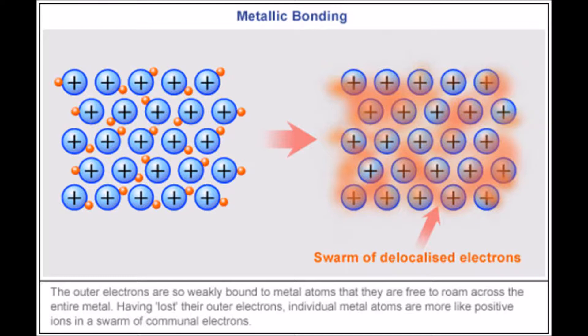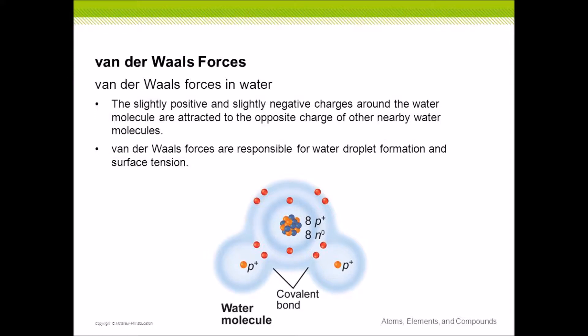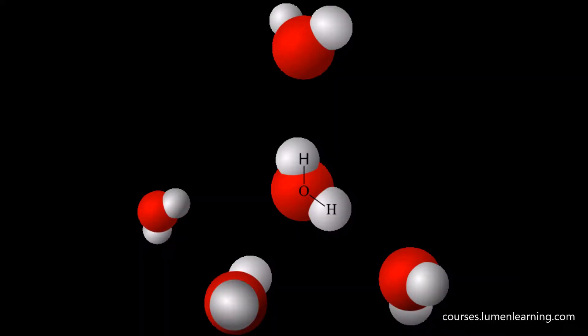Also, Van der Waals forces occur when uneven distribution of electrical charges around a neutral molecule exerts slight attractive and repulsive magnetic attraction to another molecule. For example, the oxygen atom of a water molecule is covalently bonded to a pair of smaller hydrogen atoms on one side of the oxygen atom. The hydrogen end of the molecule has a weak positive charge and the other end has a weak negative charge. When two molecules of water are in proximity, the two molecules unite together by magnetic attraction. This Van der Waals force holds them together, but the slightest disturbance may break the bond, allowing the water molecule to flow and reunite with another water molecule.